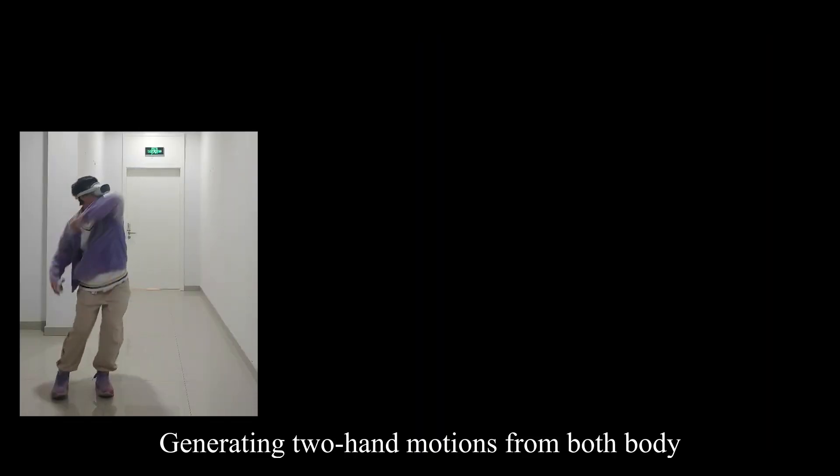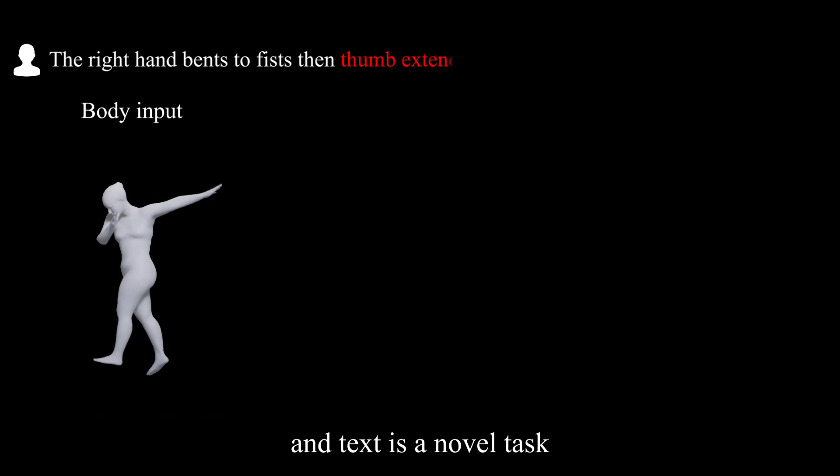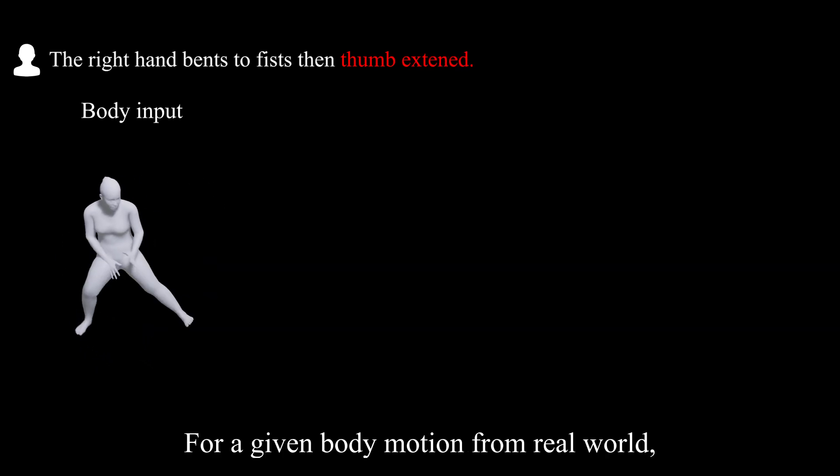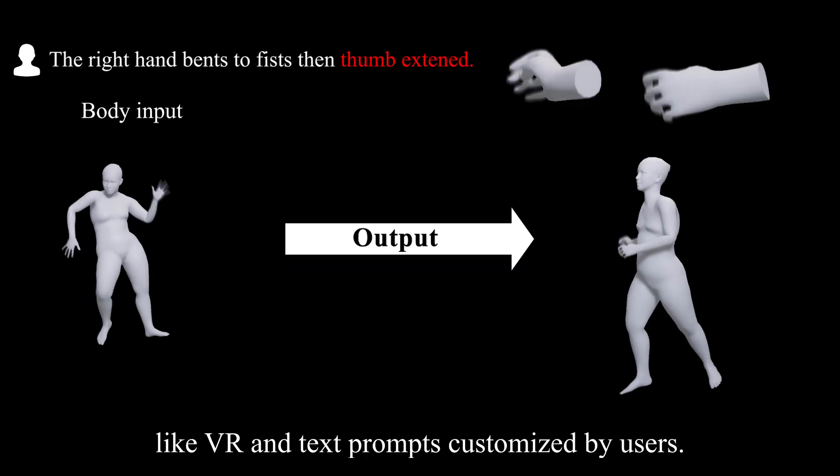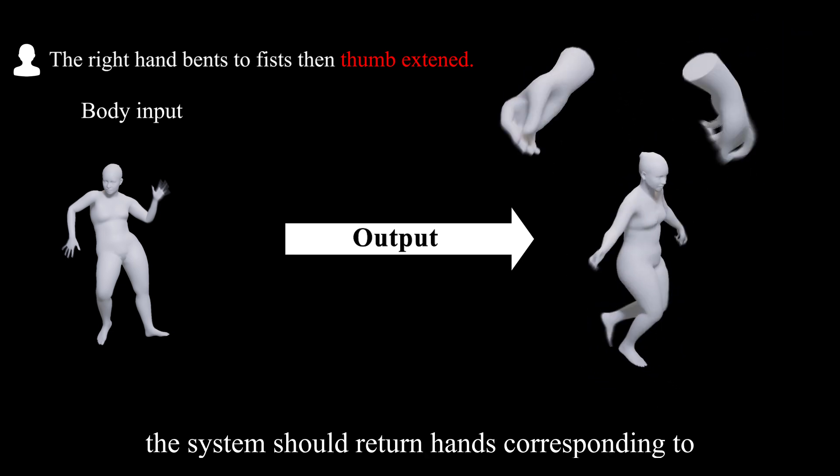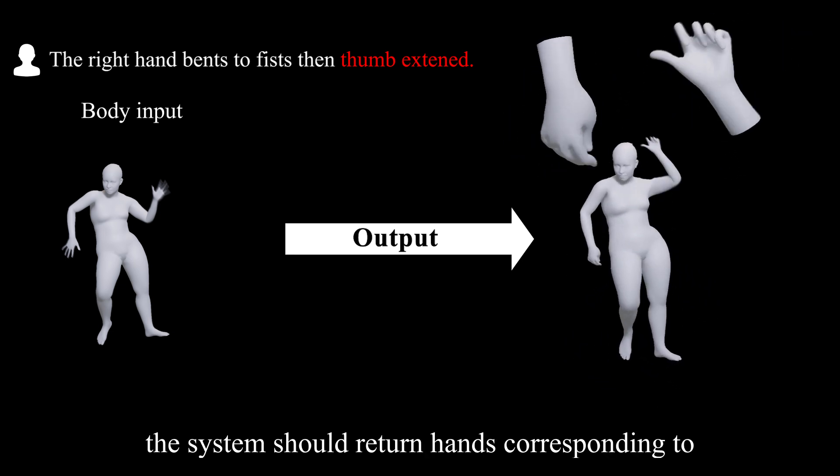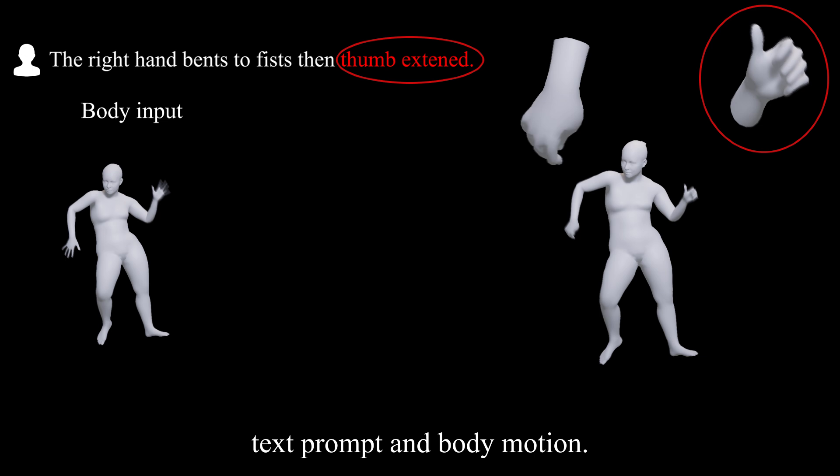Generating two-hand motions from both body and text is a novel task. For a given body motion from real-world applications like VR and text prompts customized by users, the system should return hands corresponding to text prompt and body motion.